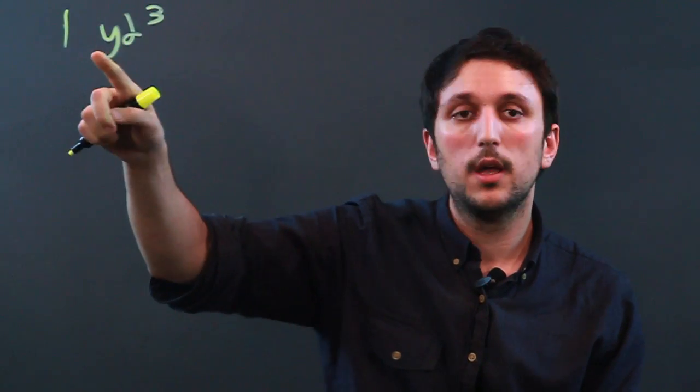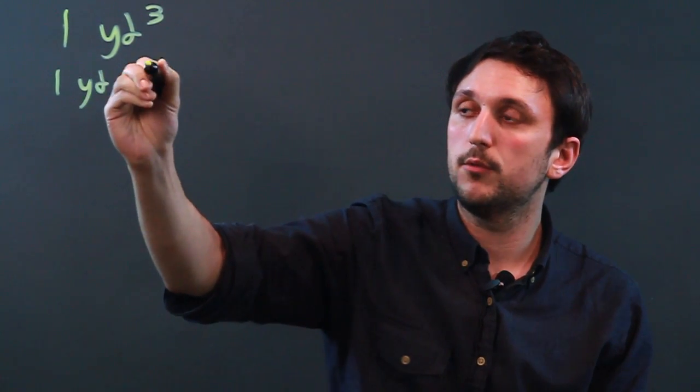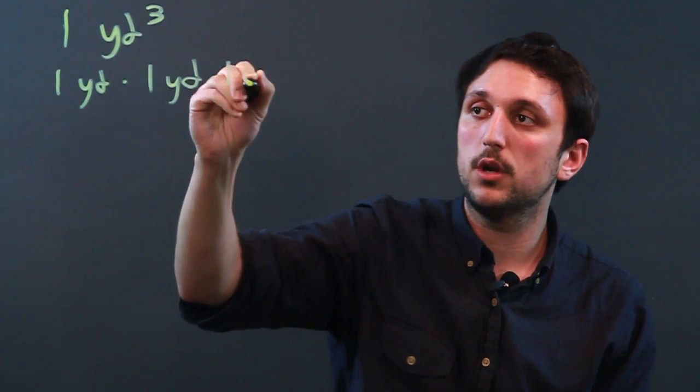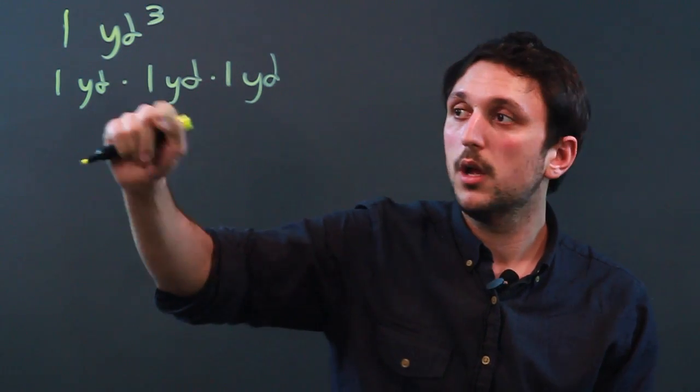So first let's look at what is a cubic yard. One yard cubed is the same as saying one yard times one yard times one yard. It's for a three-dimensional object so we're looking at volume.